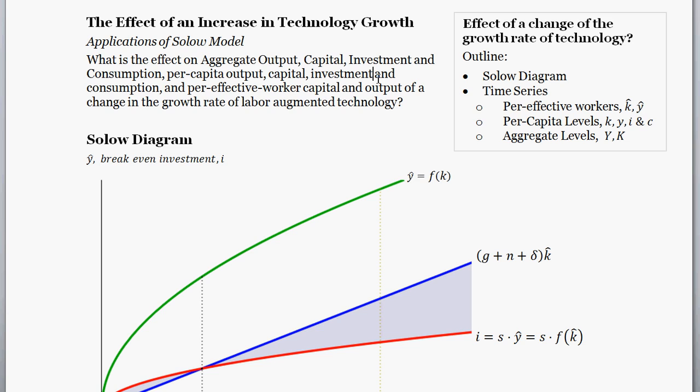The specific type of technology growth we're dealing with in this model is labor-augmenting technology growth — not to be confused with capital-augmenting technology growth, or neutral technology growth where it affects total factor productivity. This is the one typically taught in intermediate macro courses: labor-augmenting technology. So let's get started.